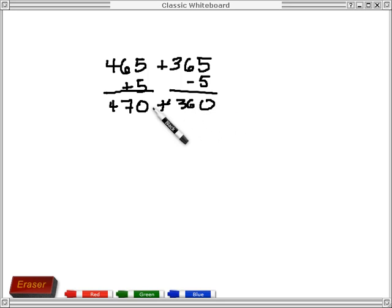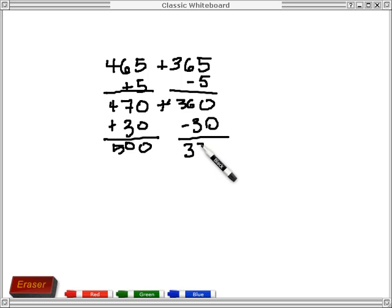Now you might decide that that's easy enough and you could go ahead and add them, but another student might decide, let's add 30 more here and make this a perfect 100. So this is now 500. And then I would have to subtract 30 here and now I'm down to 330 here. Well, 500 and 330 is easy. That's just 830.